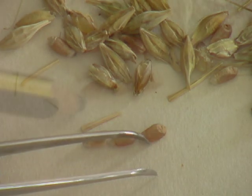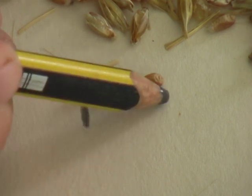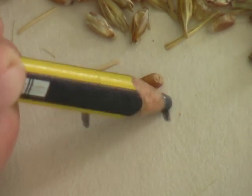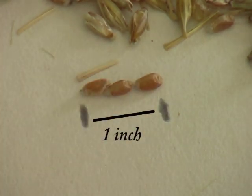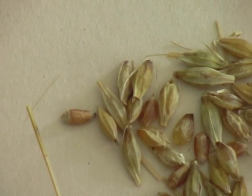Three barleycorns define an inch, and twelve inches define a foot. King Edward thought he had solved the problem. But, of course, like feet and thumbs, not all barleycorns are created equal.